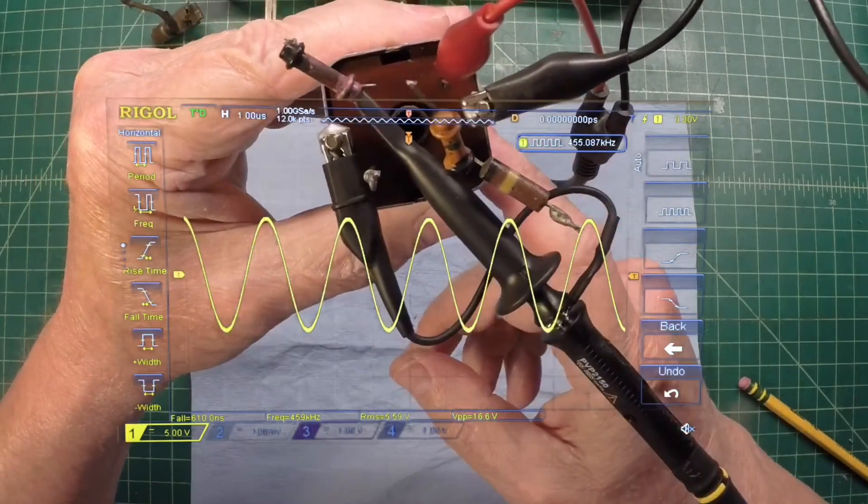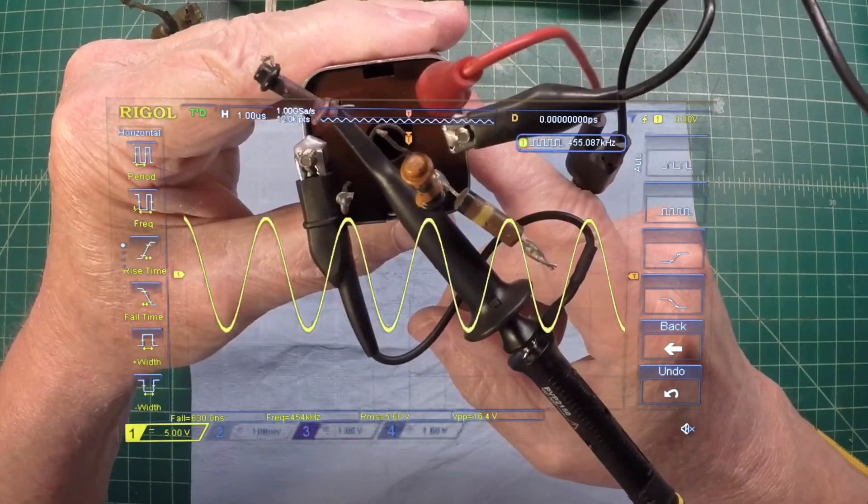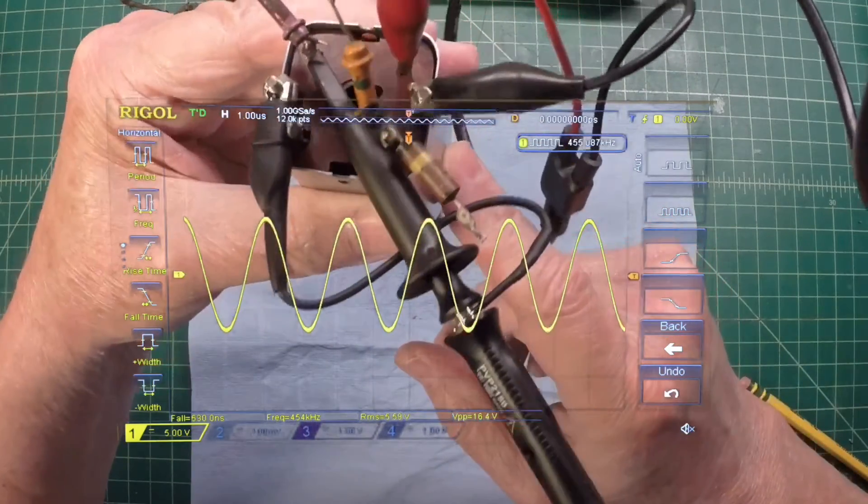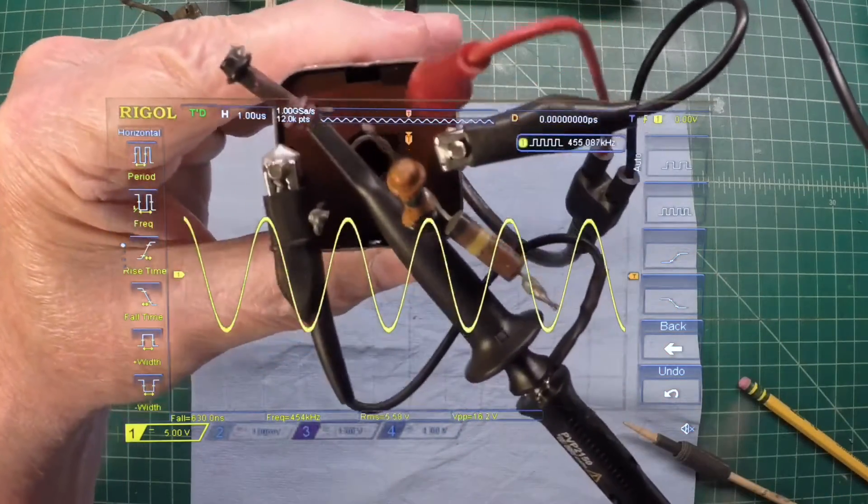When you take one of these apart, just to be able to get a good starting point there to make sure your IF is as close as possible to your called out frequency, in this case, 455 kilocycles.